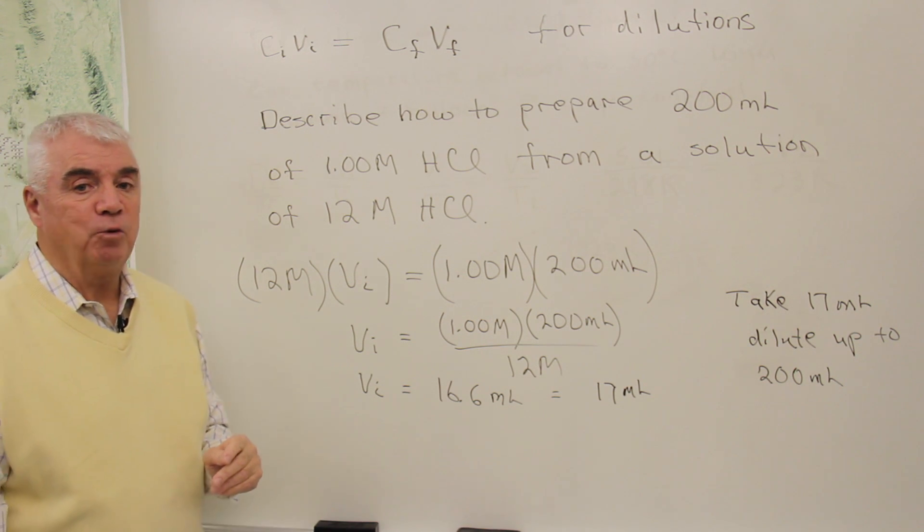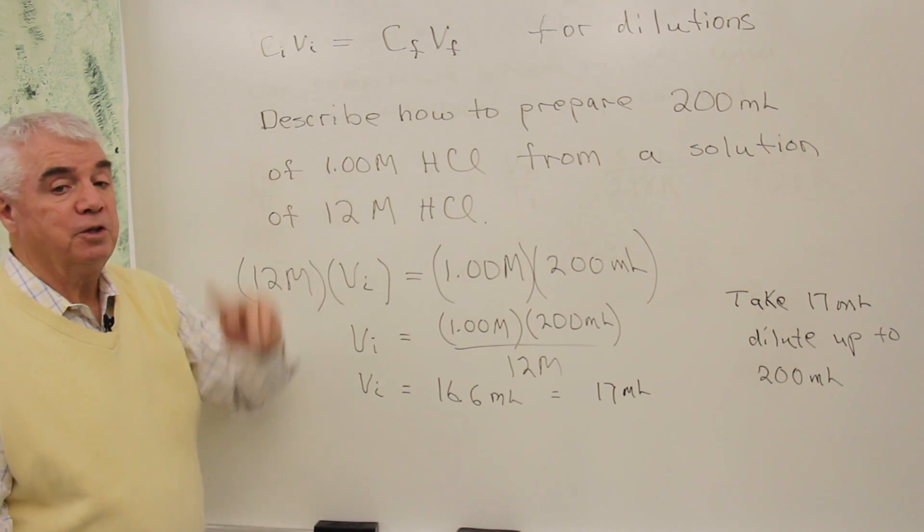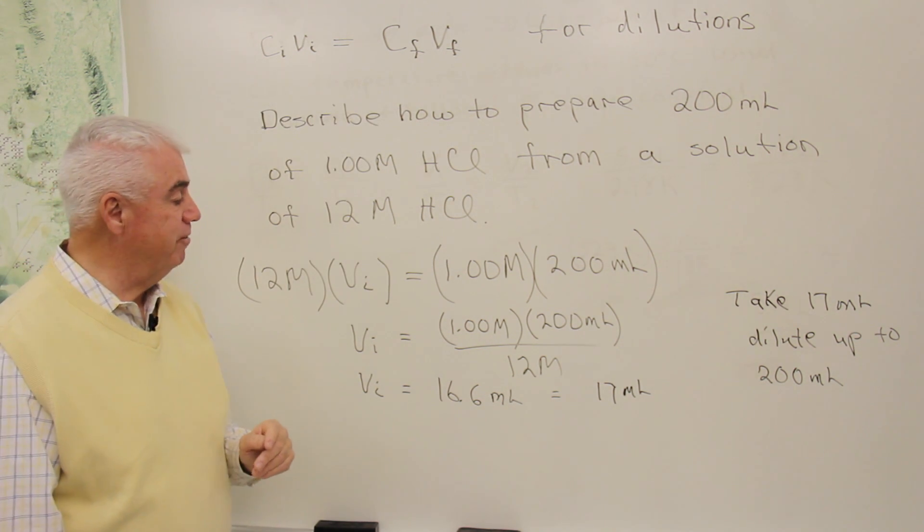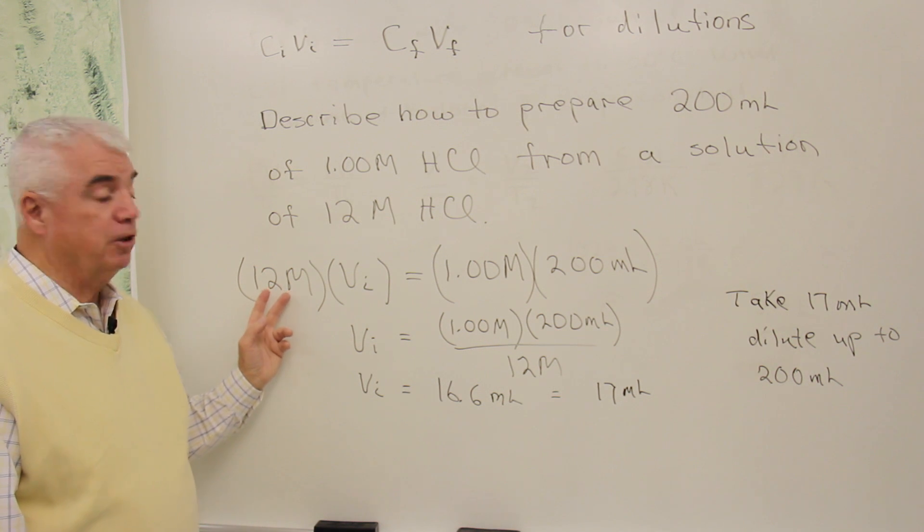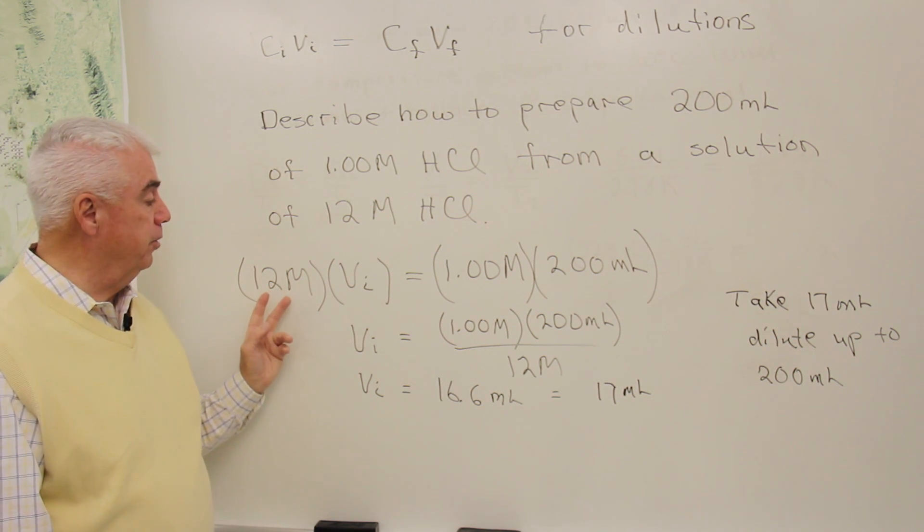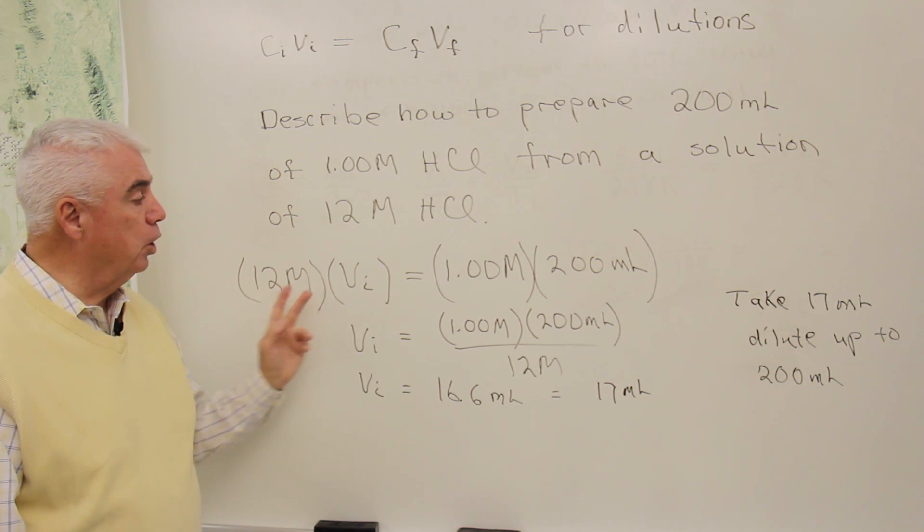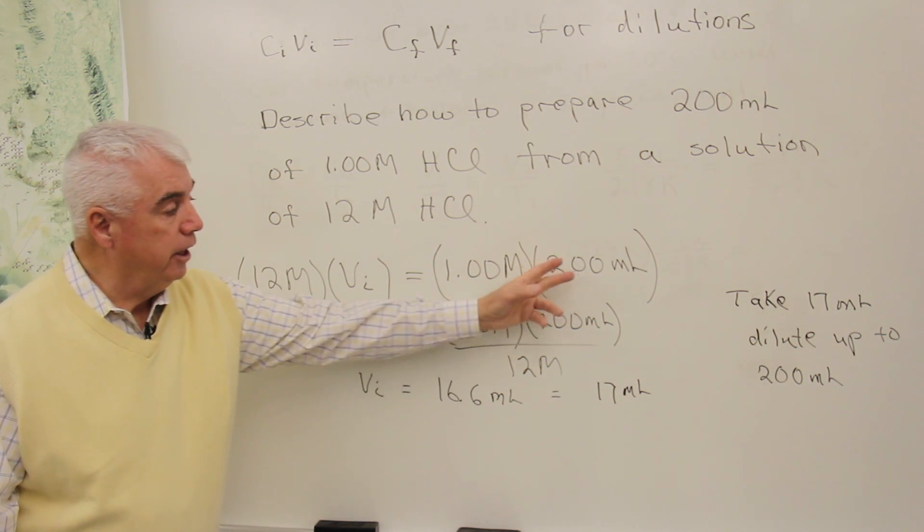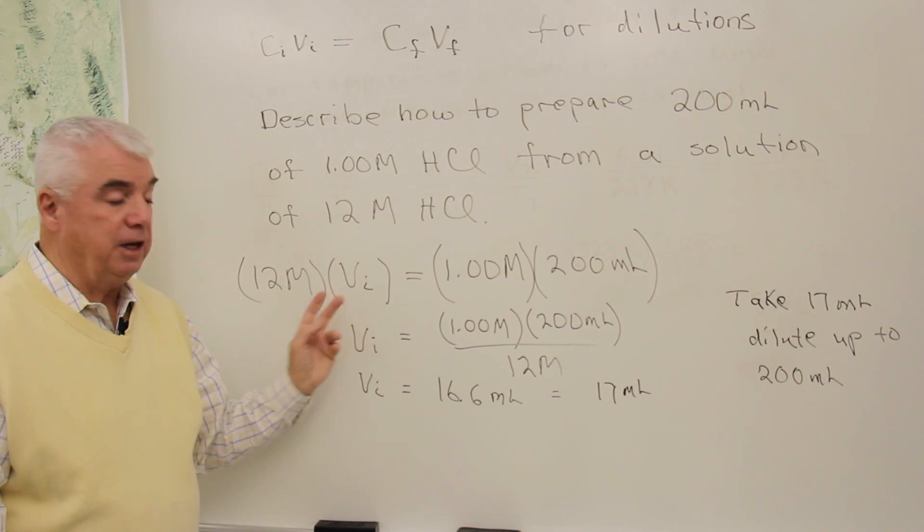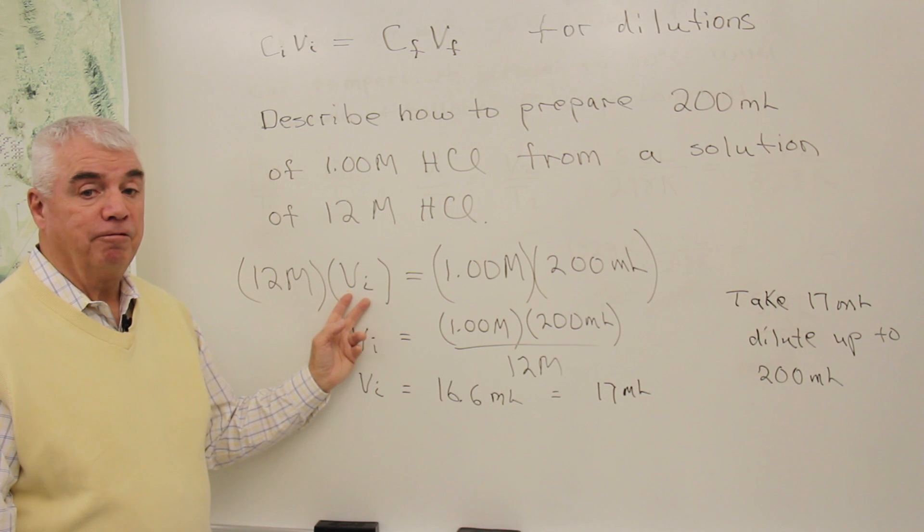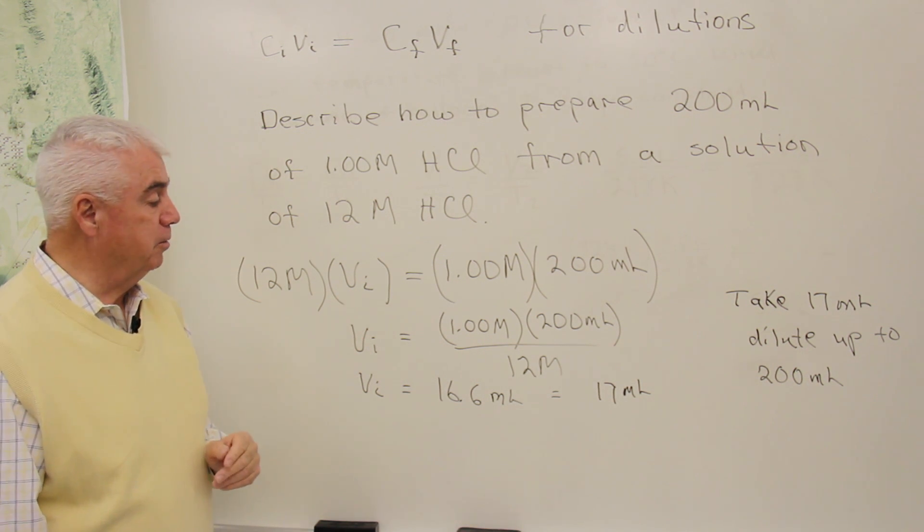The one thing that you have to watch out for when you use this formula, C V equals C V, is that we have the same units on the left and on the right. So here we have molarity. On the right, we have molarity. Here I have milliliters. That means that the initial volume will be expressed in milliliters.